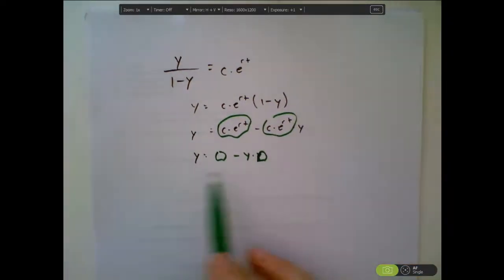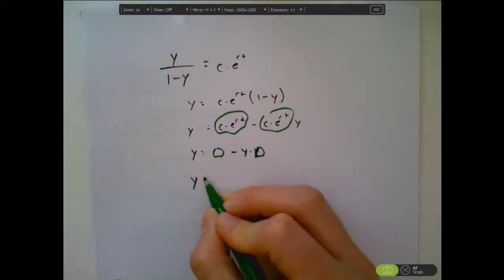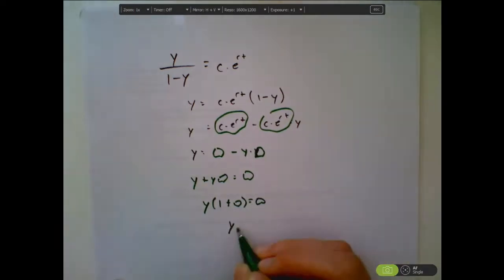that looks much easier. What am I trying to do? Alright, I'm trying to isolate y. So we'll add y times blob, so that gives us y plus y blob equals blob. Factor out the y equals blob. So now y equals blob over one plus blob.